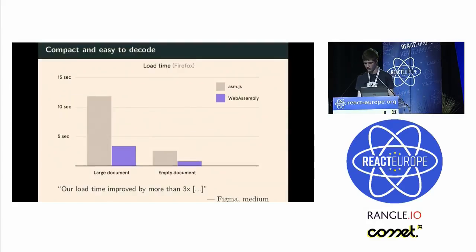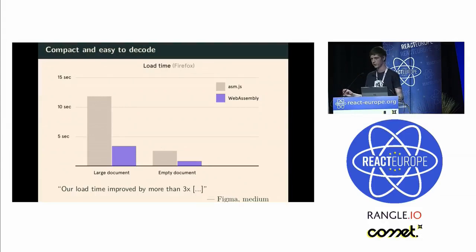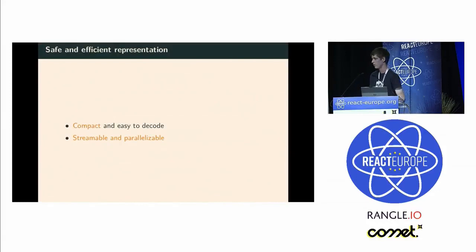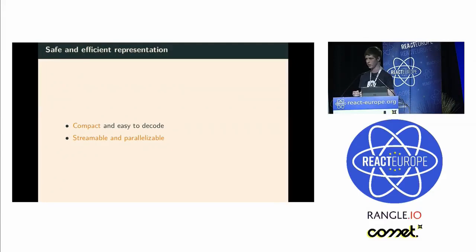Here's something cool I took from Figma's blog. Figma is a tool to create user interfaces in the browser. They used asm.js in the past, and now they are using WebAssembly, and they managed to cut the load time by three times, which is pretty impressive. A really nice property of the WebAssembly binary format is that it's streamable — you can compile and instantiate your WebAssembly module while actually downloading it, which is not possible with JavaScript. So you can gain a lot of time with that.